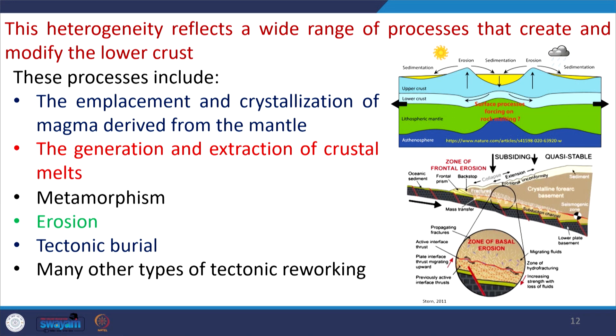The upper continental crust is of granitic to granodioritic composition, but for the lower crustal composition, no particular composition, temperature, or pressure has been determined — it varies from place to place. This heterogeneity reflects a wide range of processes that create and modify the lower crust. It is not formed by a single process like magmatic differentiation or metamorphism, but a mixture involving magmatic emplacement, metamorphism, folding, and shearing — a continuous, complex, evolving process.